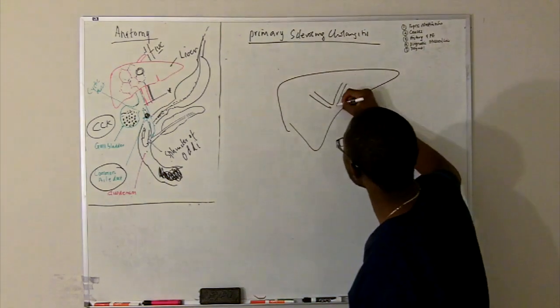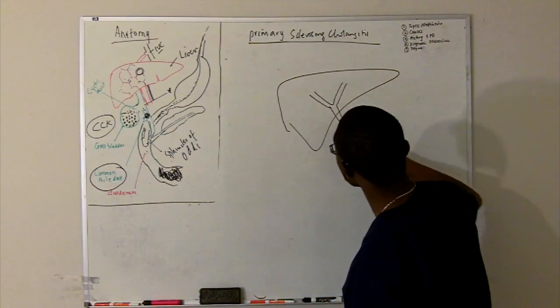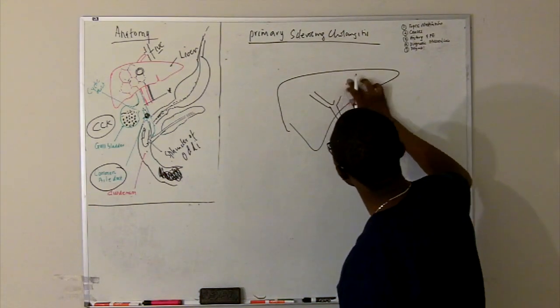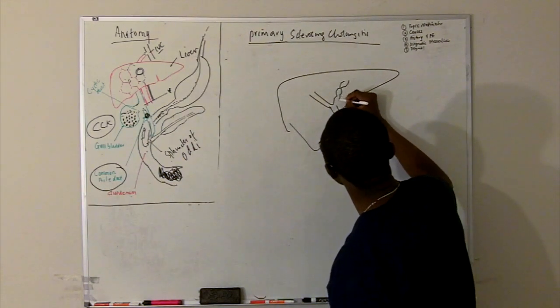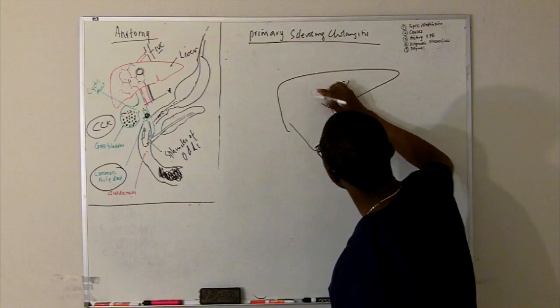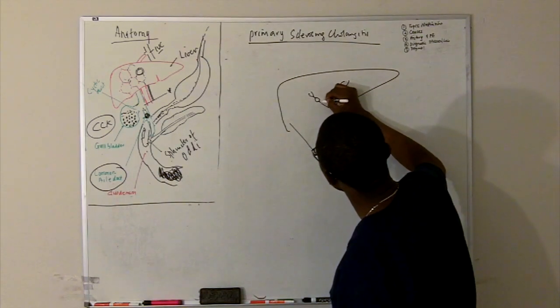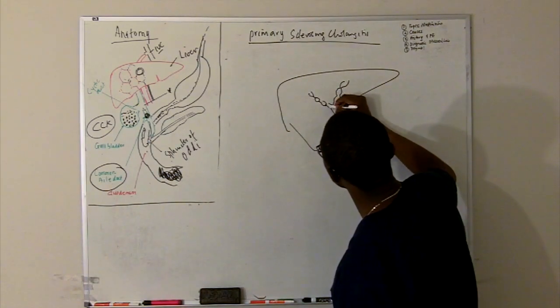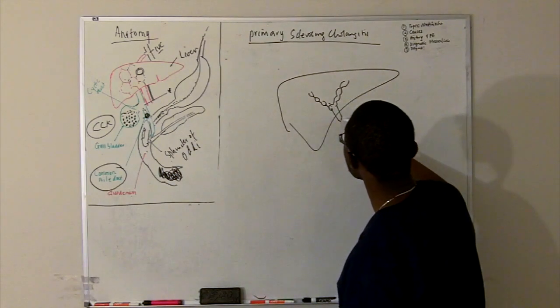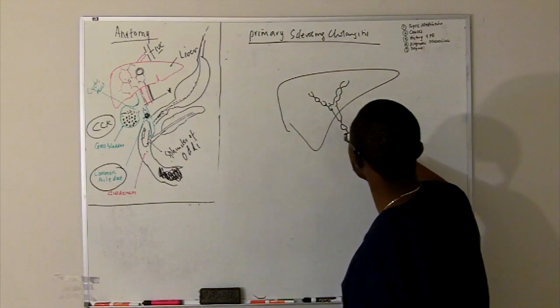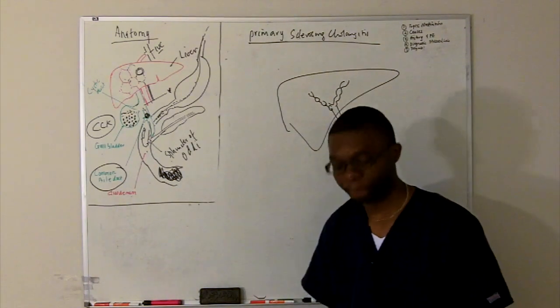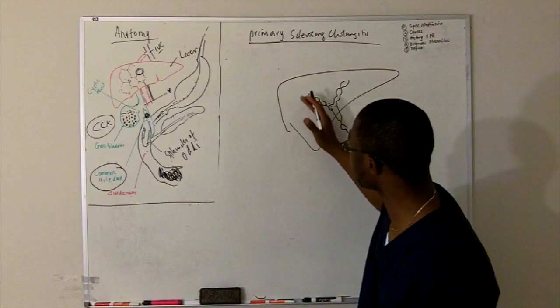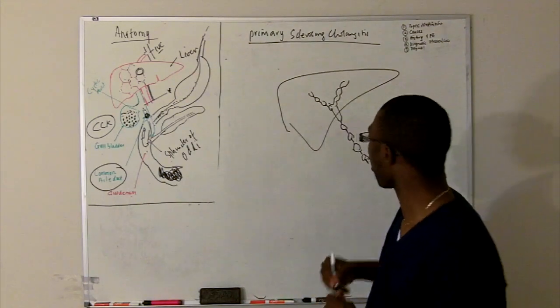Now it's the intrahepatic, but not just that. This is what it looks like. This is what the gallbladder looks like. I'm sorry, the biliary tree, the common bile duct. They get all the strictures.